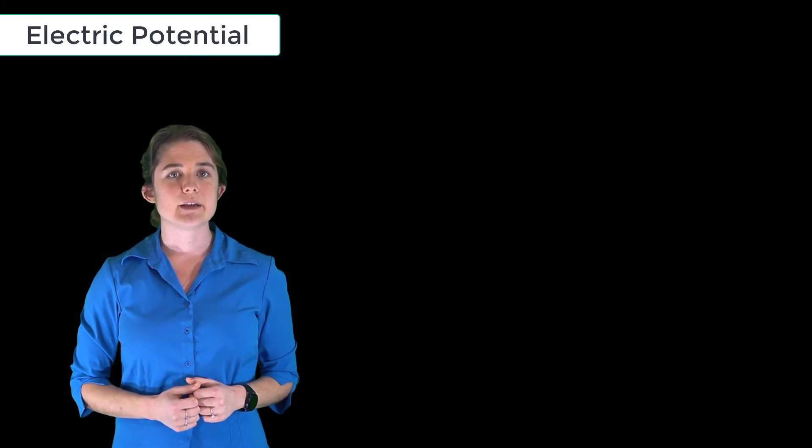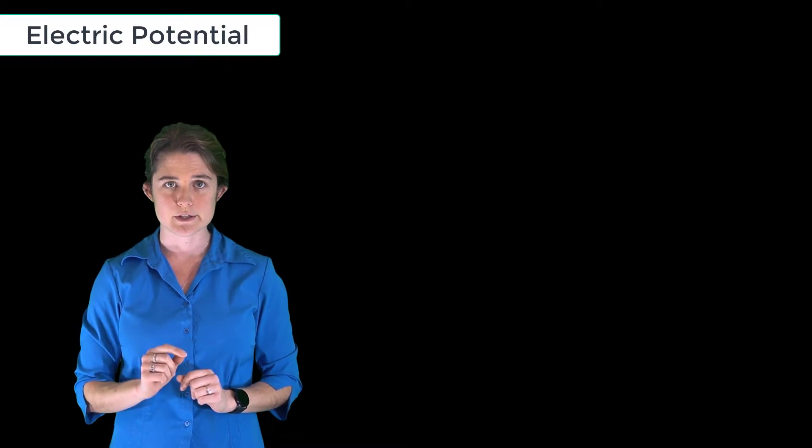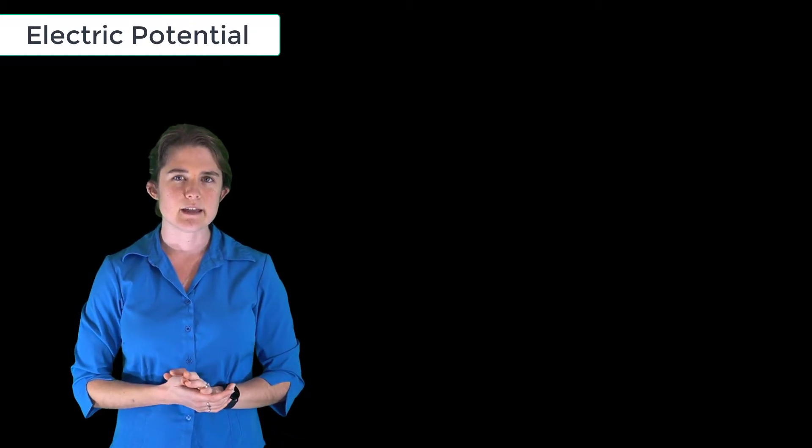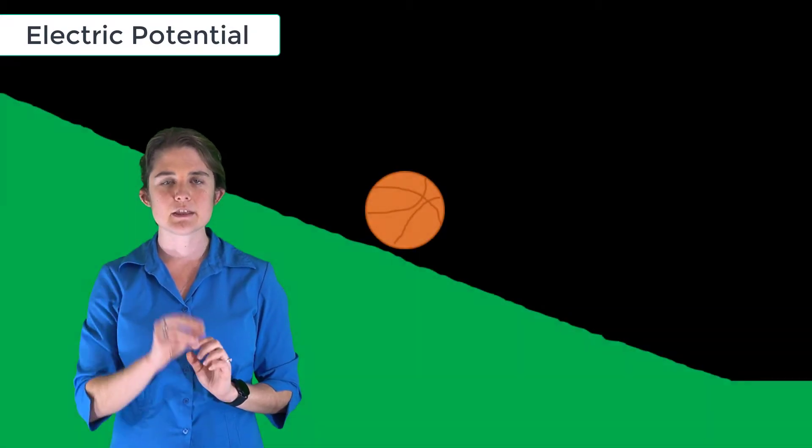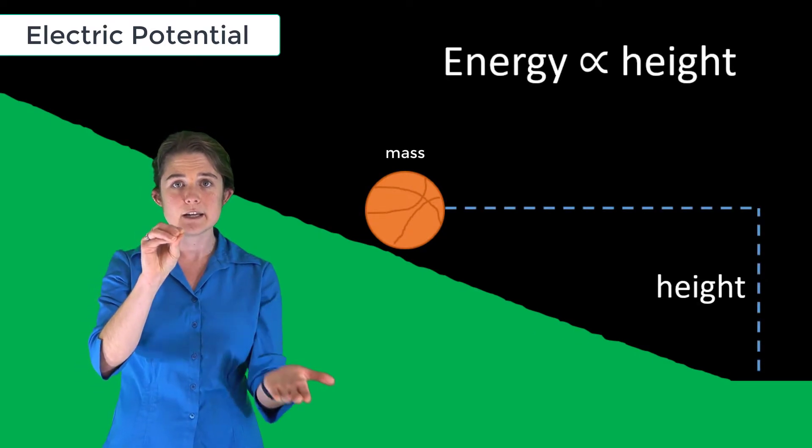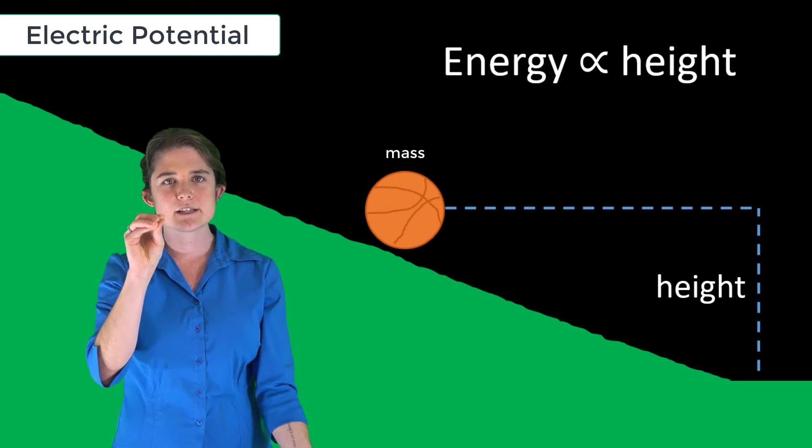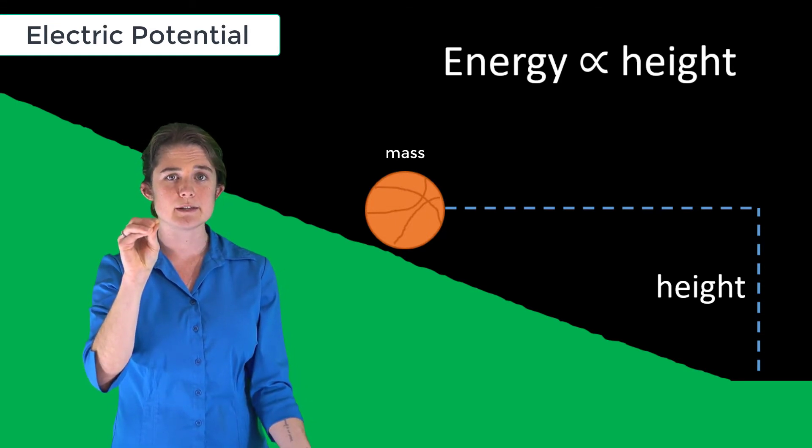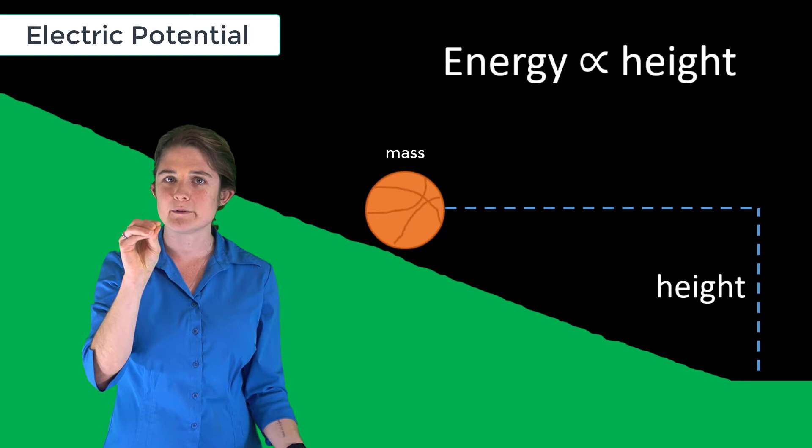This brings us to our next topic: electric potential or voltage. Let's consider again the basketball on the hill. The basketball has a certain amount of potential energy by virtue of its height above the bottom of the hill, but that energy doesn't only depend on where the basketball is—it also depends on where the bottom of the hill is.